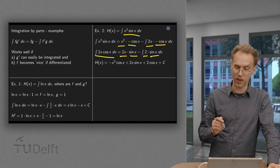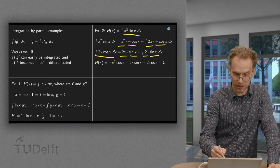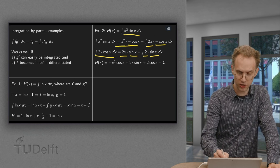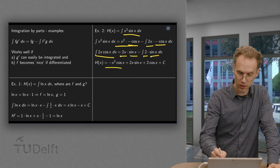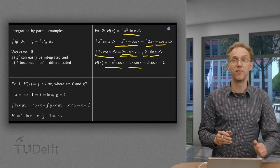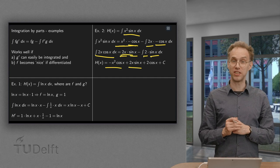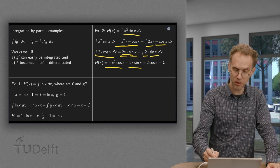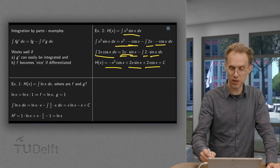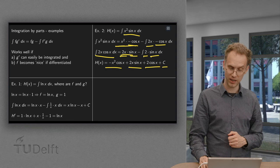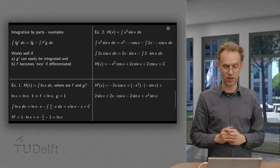So what do we have in total? We had minus x²·cos(x) from the first step, plus 2x·sin(x) from the second step. We still have to integrate minus 2·sin(x), which gives 2·cos(x), plus an integration constant. And there we have our answer h(x).